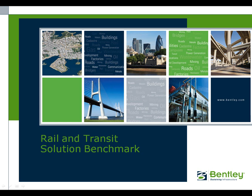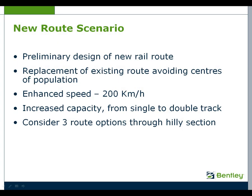Welcome to the Rail and Transit Solution Benchmark for new rail route feasibility design. For our new route scenario we're going to look at the preliminary design of a new rail route. This will replace an existing route avoiding centres of population. The speed on the new route will be set to 200 km per hour and the capacity will be increased by upgrading the route from single to double track.